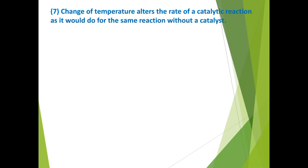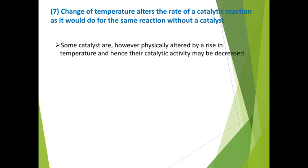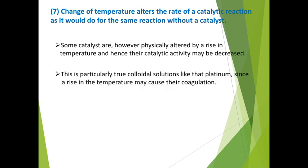Characteristic 7: Change of temperature alters the rate of catalytic reaction as it would for the same reaction without catalyst. With temperature change, the rate of reaction changes. However, rise in temperature may decrease catalytic activity — for colloidal solutions like platinum, rising temperature may cause coagulation of the catalyst.